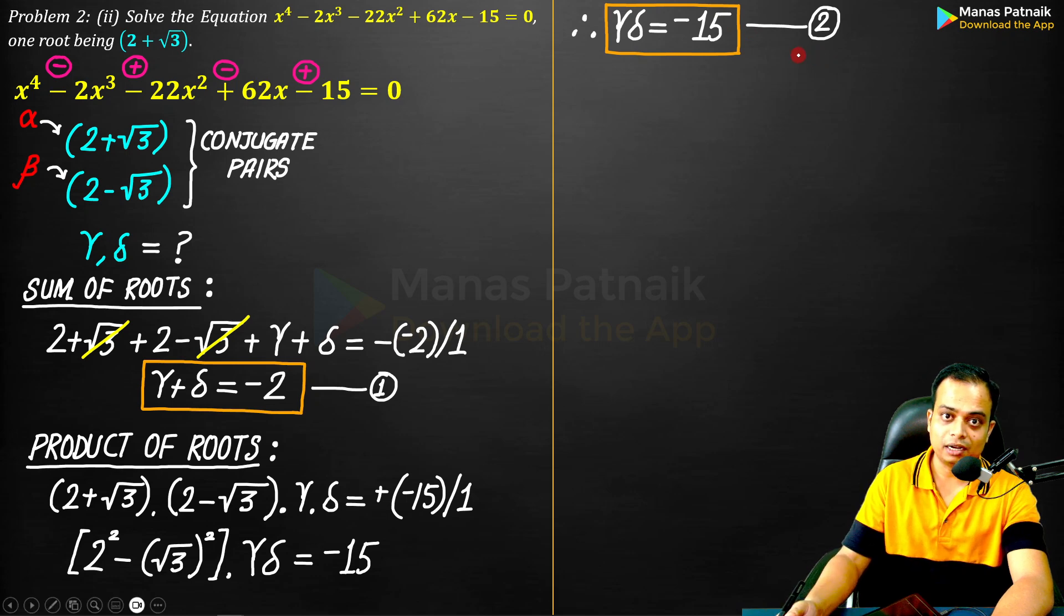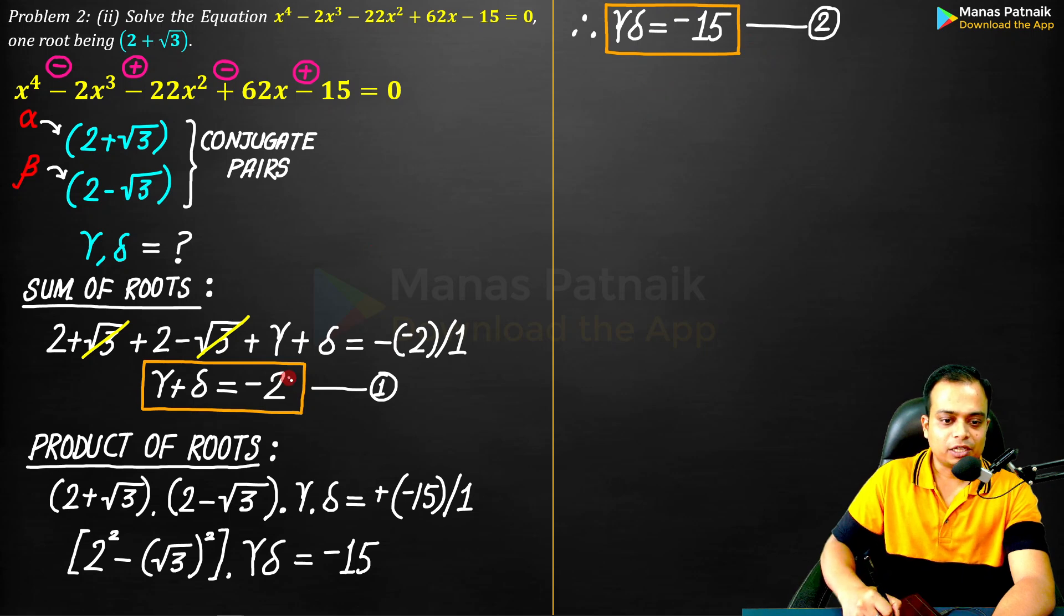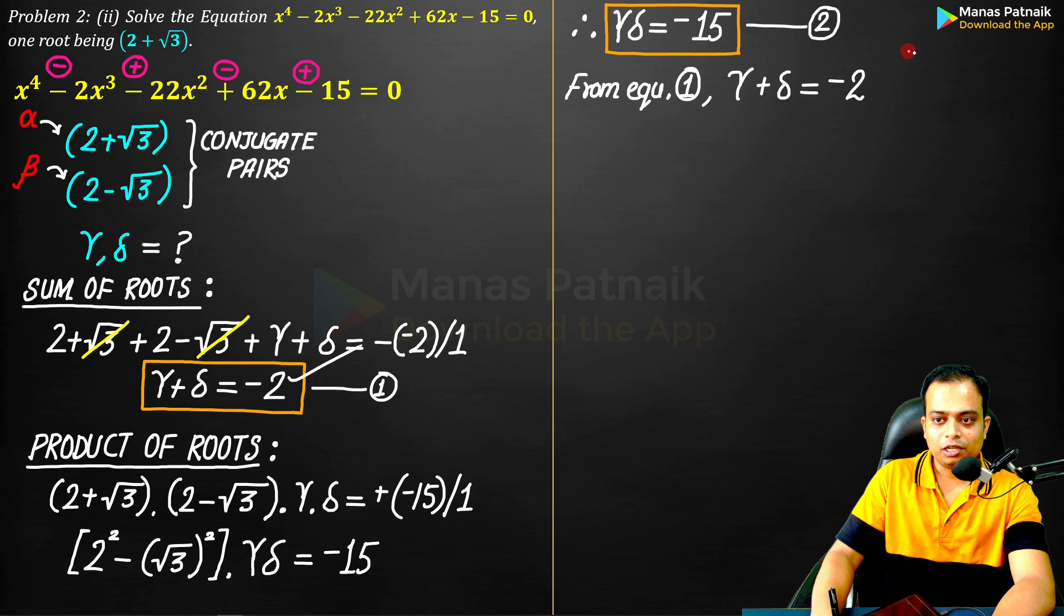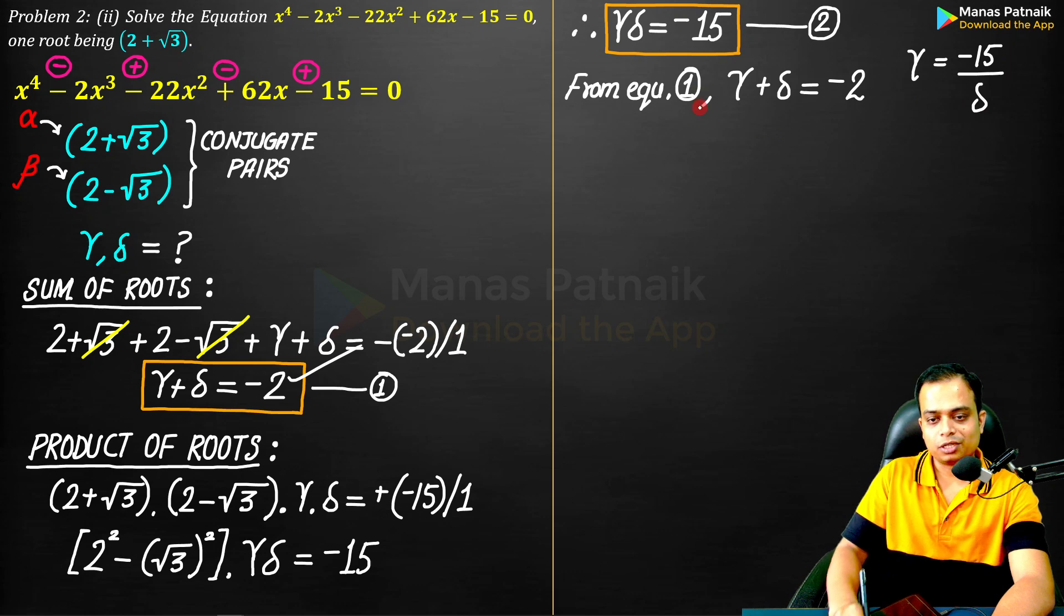Two equations, two unknowns γ and δ can be worked out very easily. Let's start with equation number one. What we can do is we can put the value of γ = -15/δ. Let me put this value of γ into equation one.